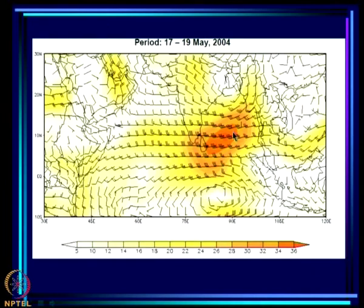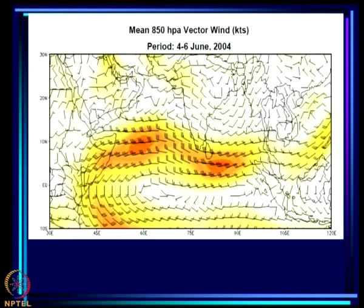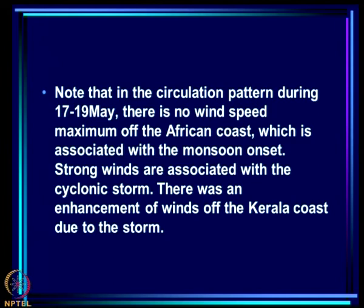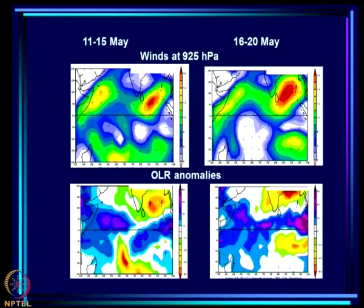Very strong winds occurred over the Arabian Sea and Bay of Bengal in association with the cyclonic storm, but not as cross-equatorial flow. When the actual monsoon onset occurred in early June, a very strong cross-equatorial flow and strong westerlies were present along the entire region. During May 17–19, there was no wind speed maximum off the African coast that is associated with monsoon onset — strong winds were associated only with the cyclonic storm.